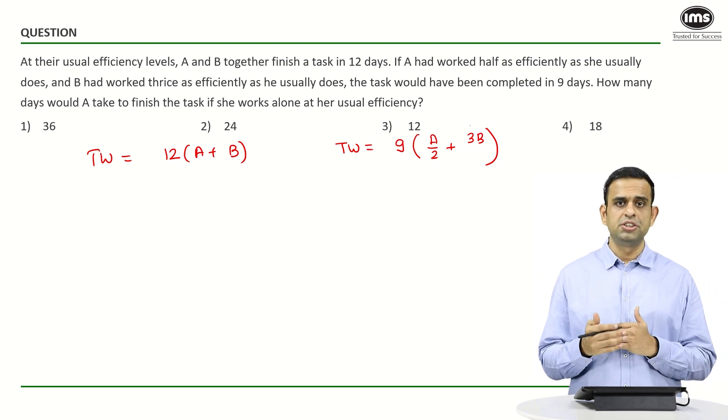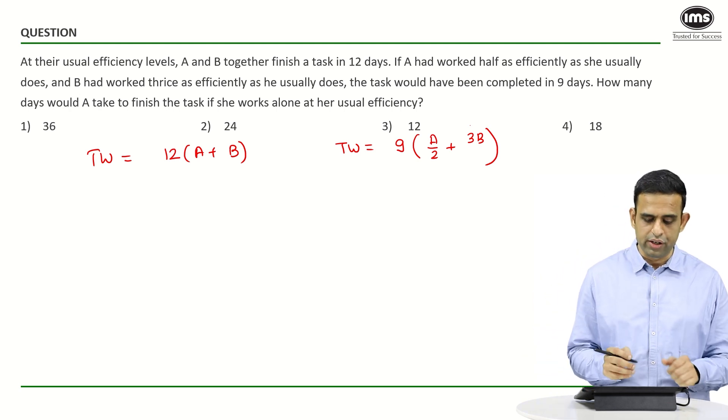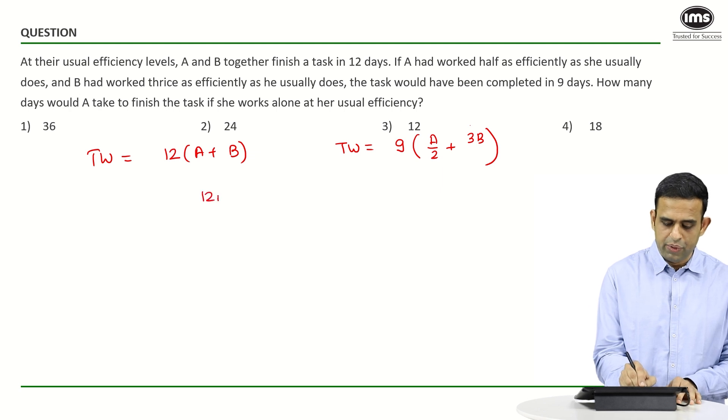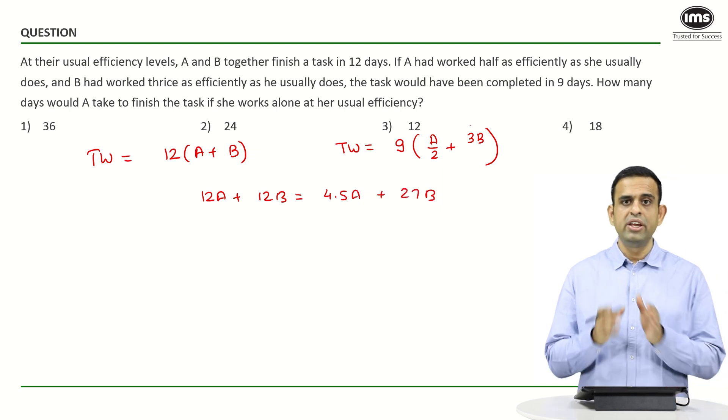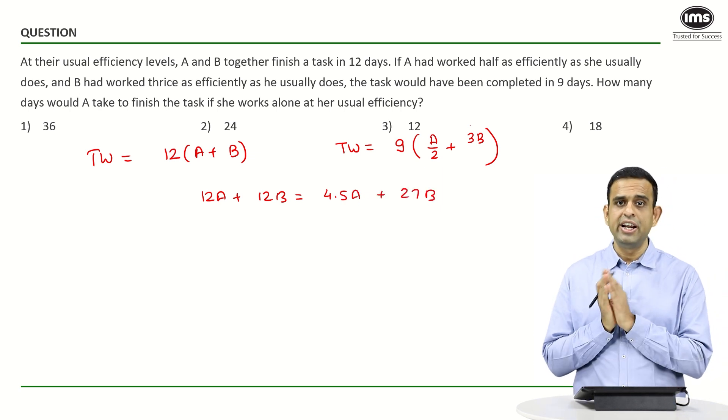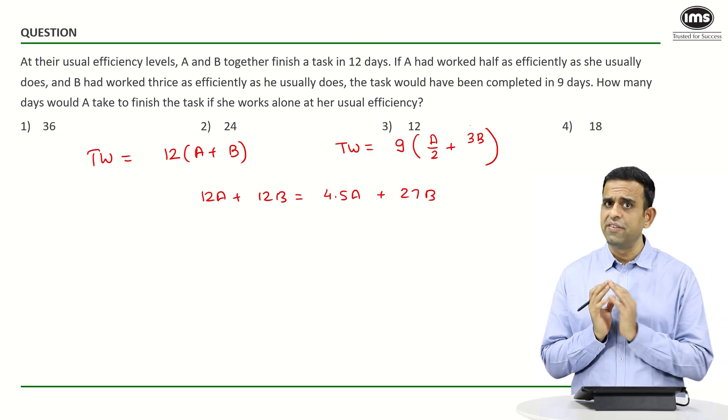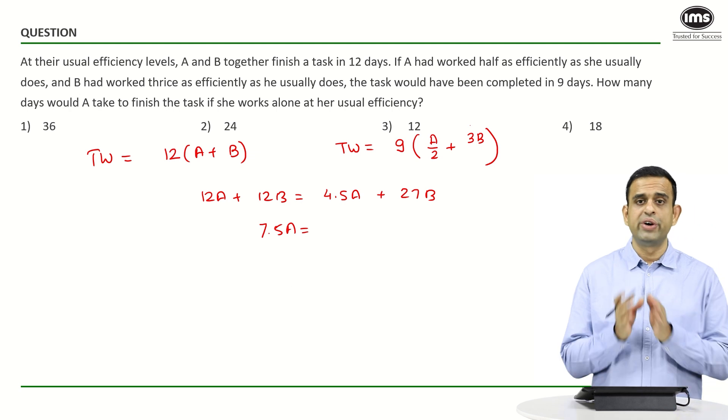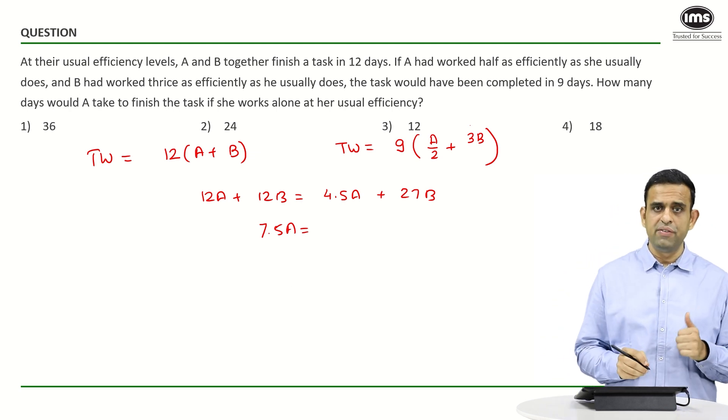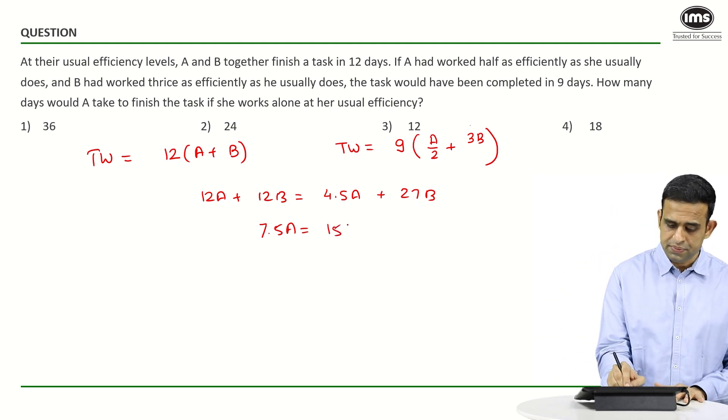If we equate both equations, 12A + 12B = 4.5A + 27B. Bringing A on one side and B on the other, 12A - 4.5A gives 7.5A equals 27B - 12B, giving 15B. So A = 2B.